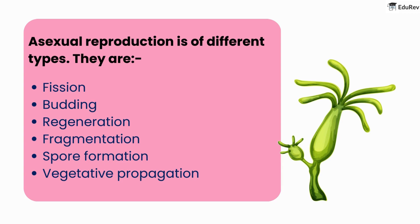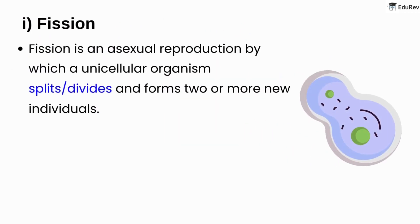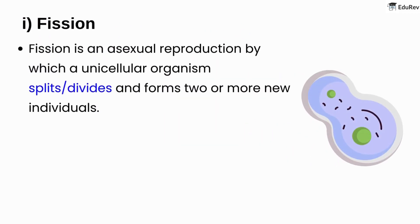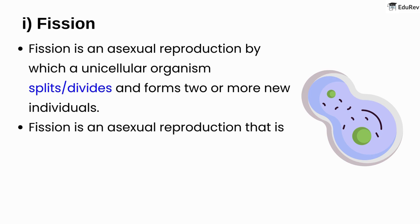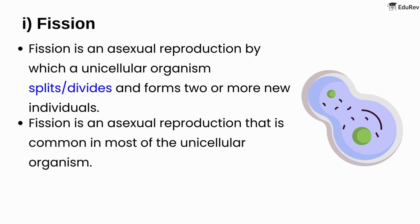Let's look at each type in detail. Fission is an asexual reproduction by which a unicellular organism splits or divides and forms two or more new individuals. Fission is common in most unicellular organisms.